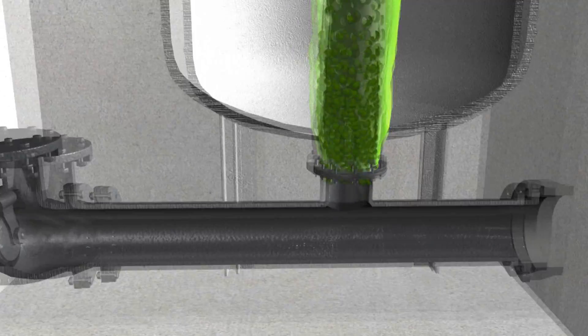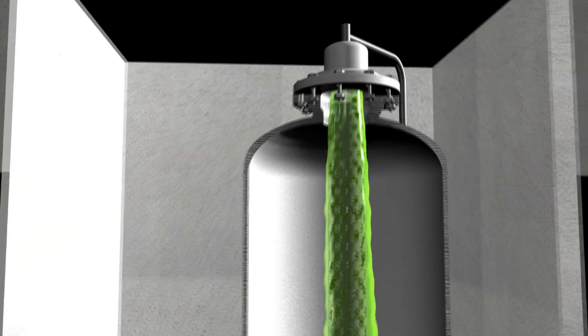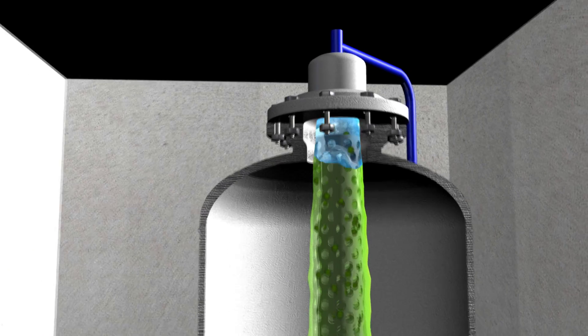Solids that may have accumulated at the bottom of the column are flushed away using a water connection at the top of the tank.